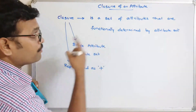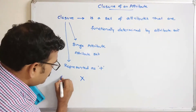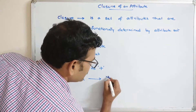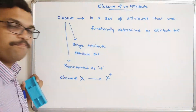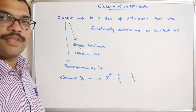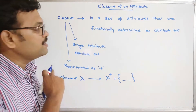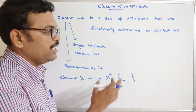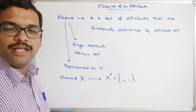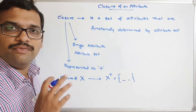So X+ equals the set of attributes functionally determined by the attribute set X. We can apply closure on a single attribute or on an attribute set — meaning multiple attributes. The closure tells us all attributes we can determine from a given set.